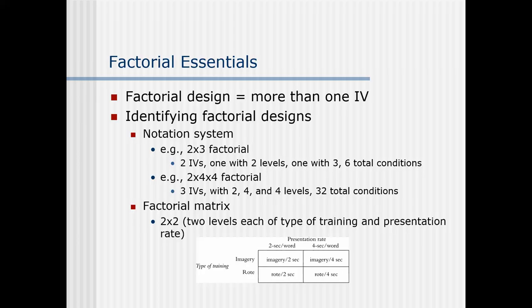Let's talk about the notation system. For example, we talk about a two-by-three factorial. What that means is there are two independent variables, one with two levels and one with three levels. We use the 'x' there — we don't say 'times,' we say a two-by-three factorial design. We use that 'x' kind of like a multiplication symbol, because in factorial design, when you're looking at interactions, you do multiply things together, and that's where it came from.